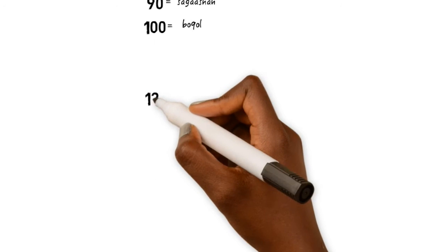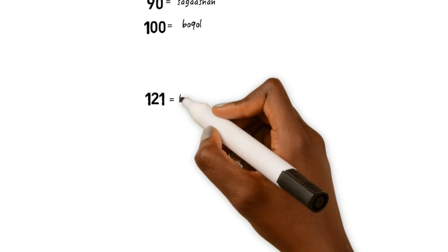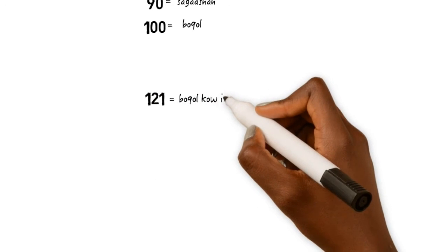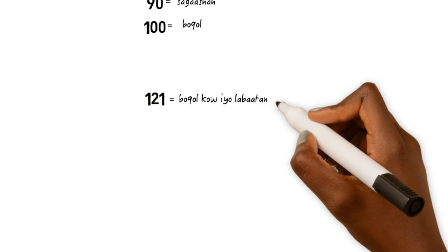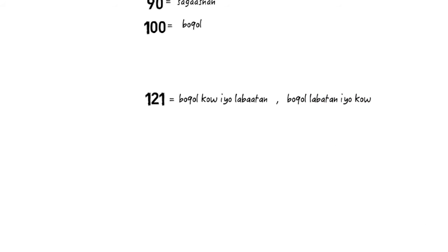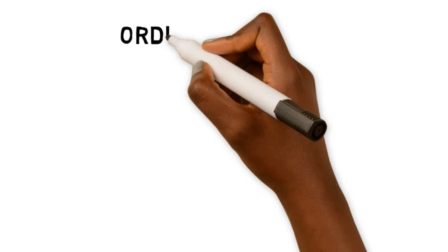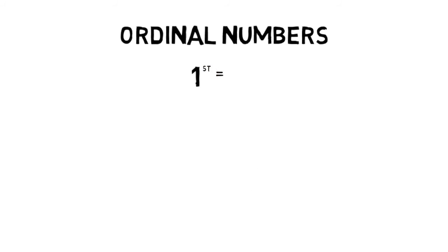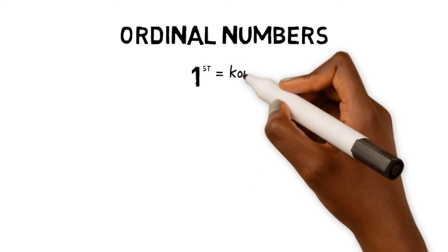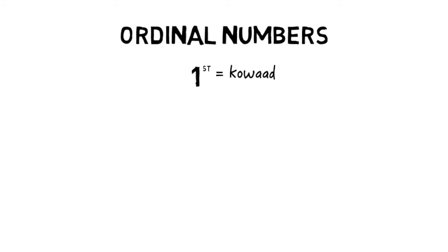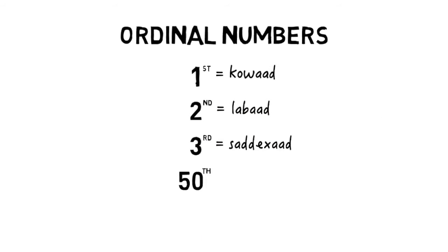Even after 100 the trend is the same — hence 121 will be 'Bakolio Kou ii Lawatan' in the north, while it's 'Bakolio Kou' in the south. When adding ordinals to numbers, like 1st or 50th, you just add '-ad' to the number. For example, 1st will be 'Kouad,' 30th will be 'Sodomad,' and 100th will be 'Bakolat.'